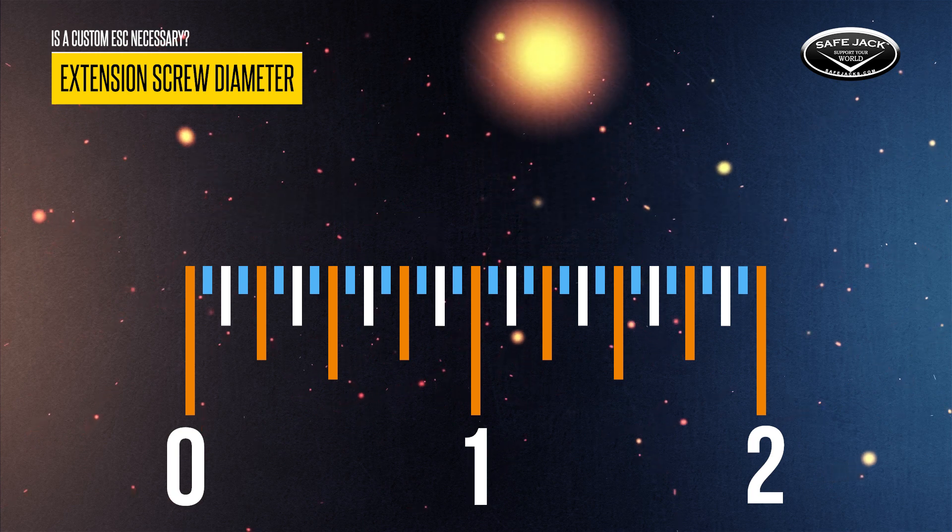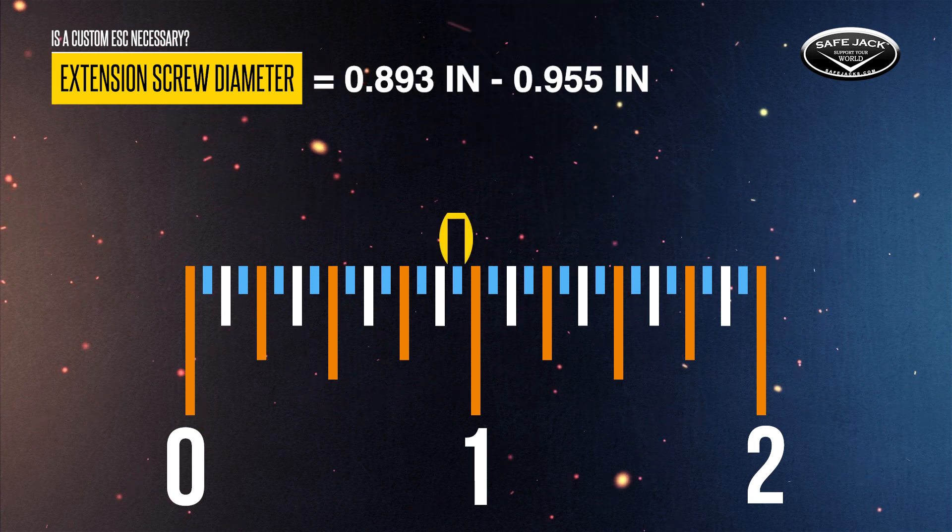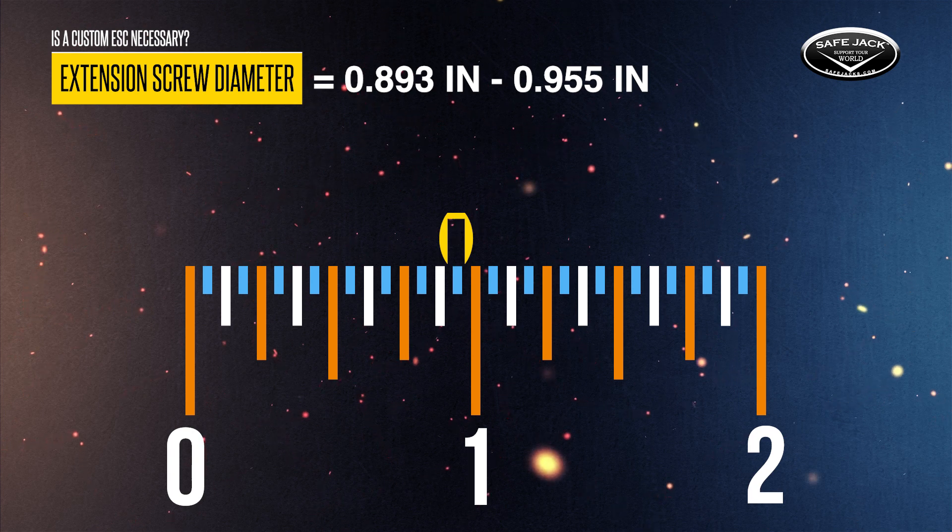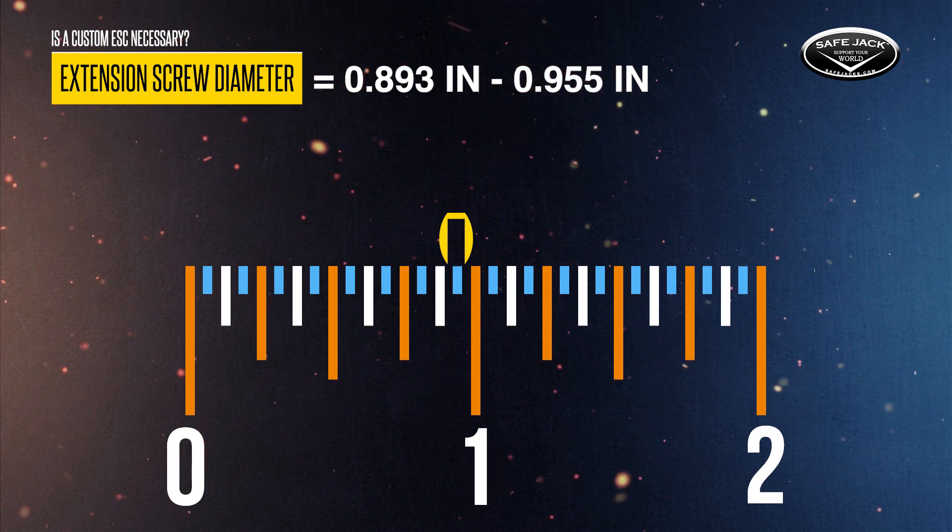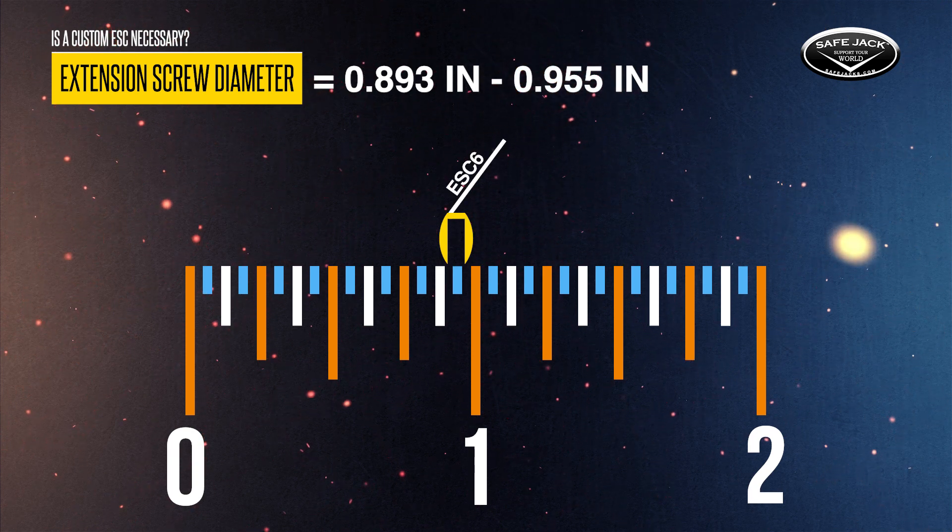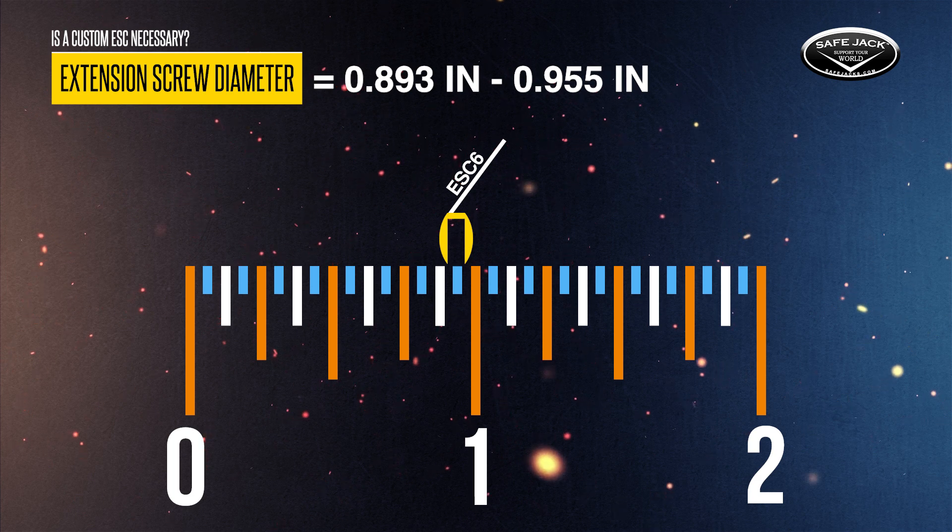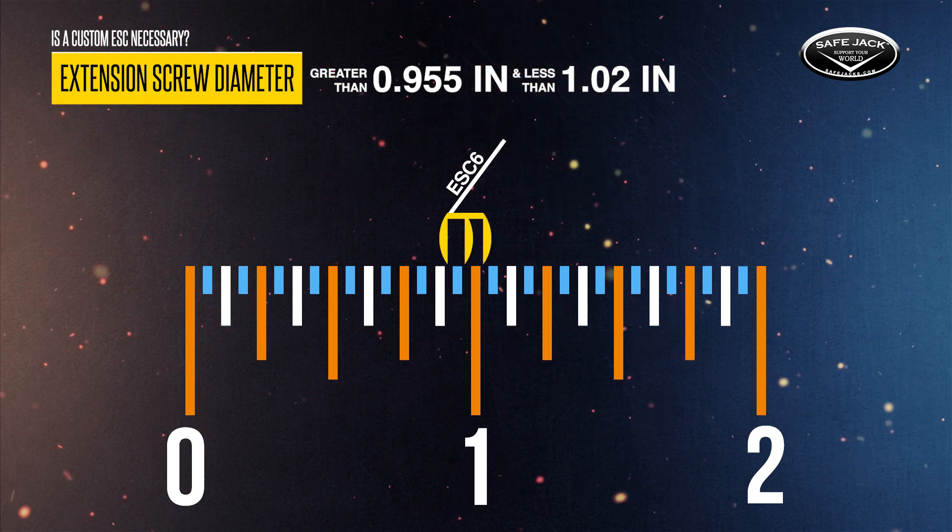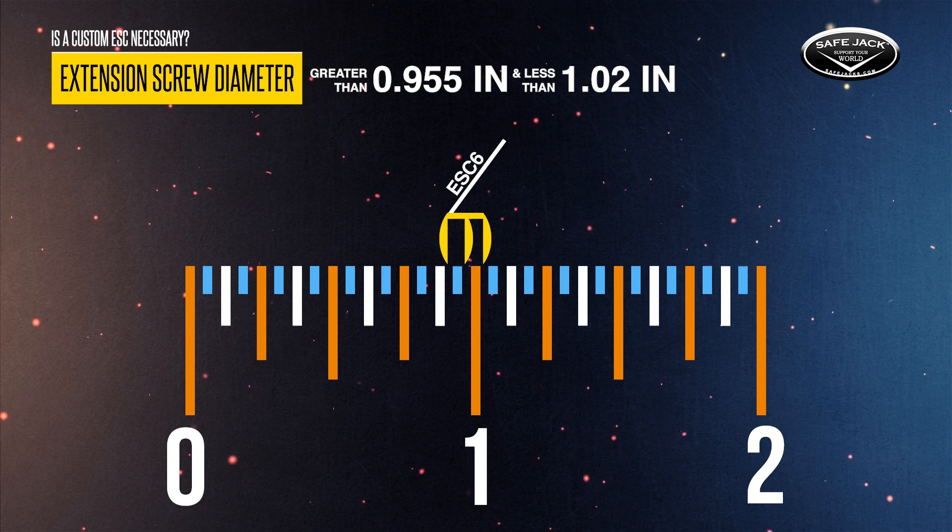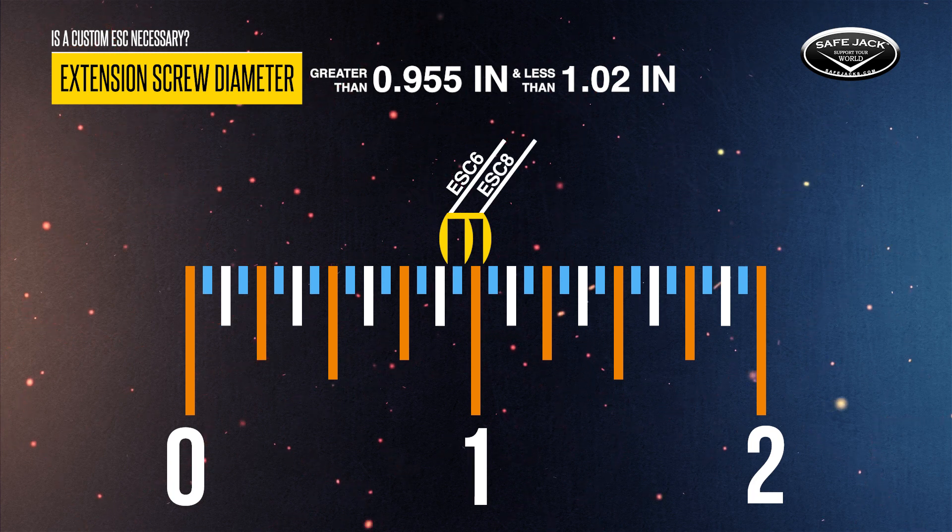If your extension screw diameter is 0.893 inches to 0.955 inches, you do not need a custom ESC and can just use our regular ESC 6. If it's any larger than this but still smaller than 1.02 inches, then we recommend you purchase our ESC 8.